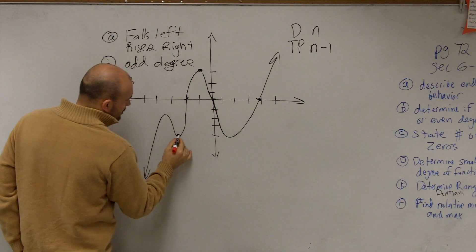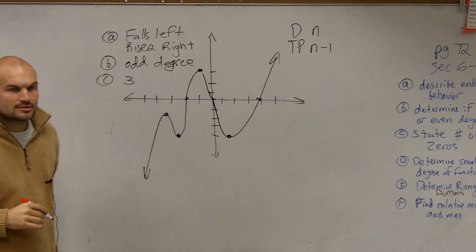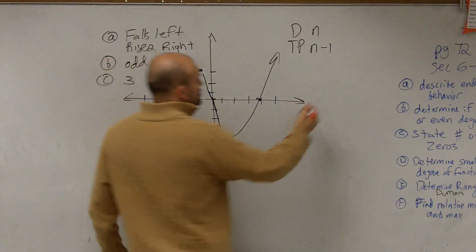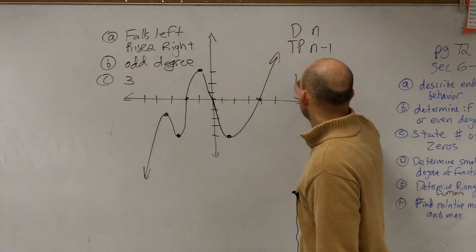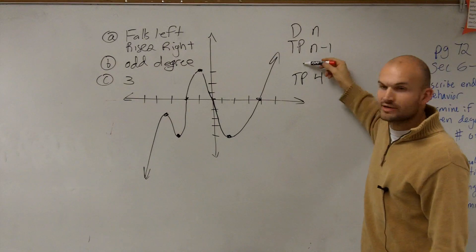So in my example, I have one, two, three, four turning points. One, two, three, four turning points. Since I have four turning points, therefore, my turning points equals four. What would you guys then say my degree is going to be?